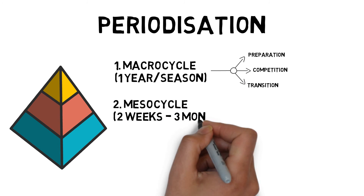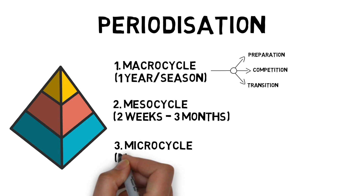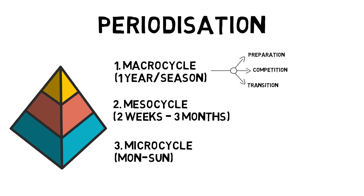Meso cycles are short-term goals within a macro cycle, usually lasting between two weeks and three months. They may focus specifically on a component of training, such as muscular endurance. Micro cycles are the one to two weeks of training that can be repeated throughout a mesocycle, and they dictate exactly what an individual is working on from Monday to Sunday.